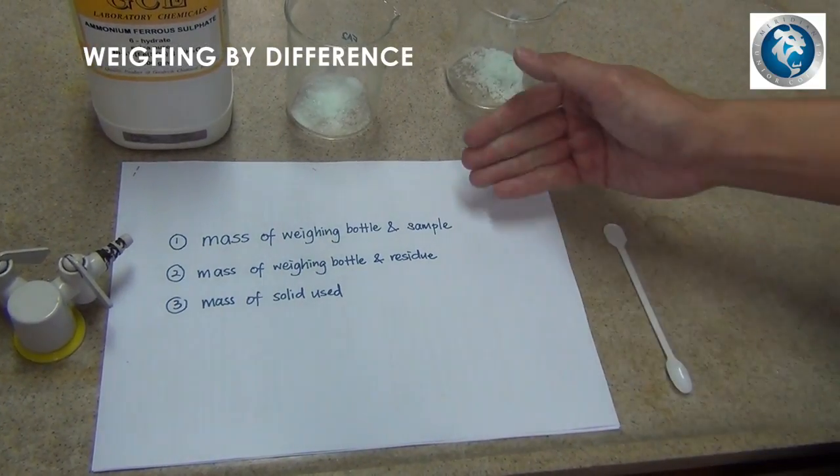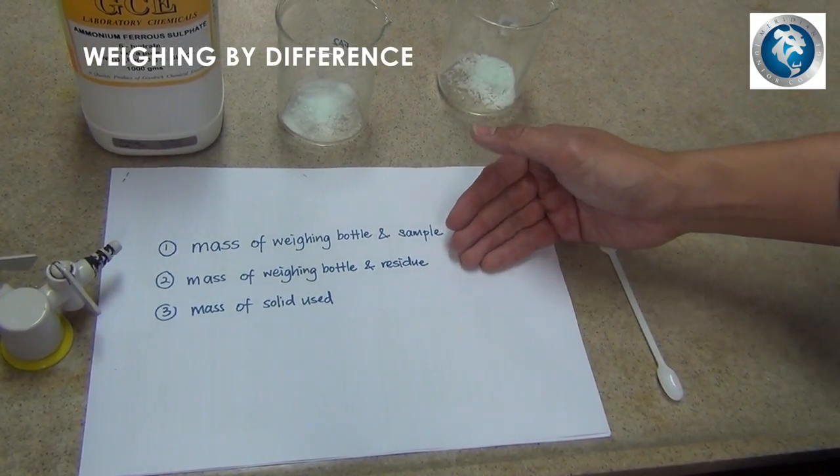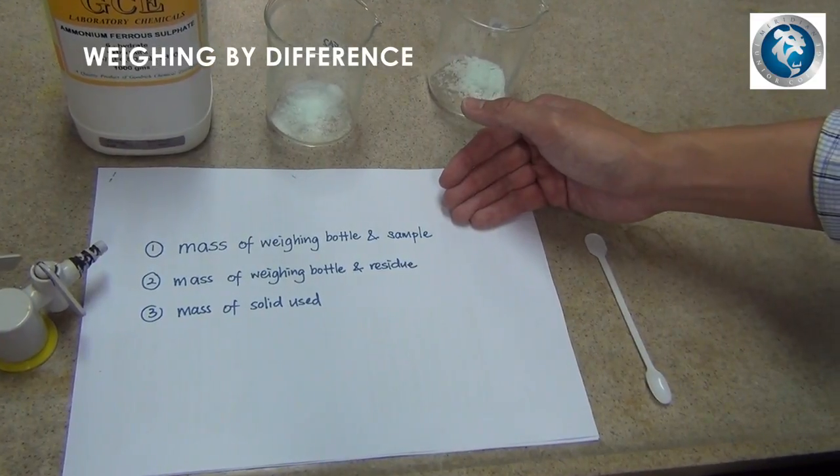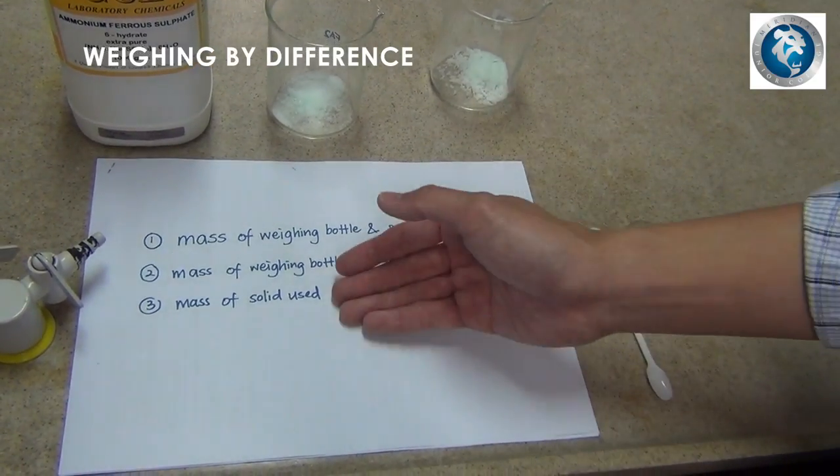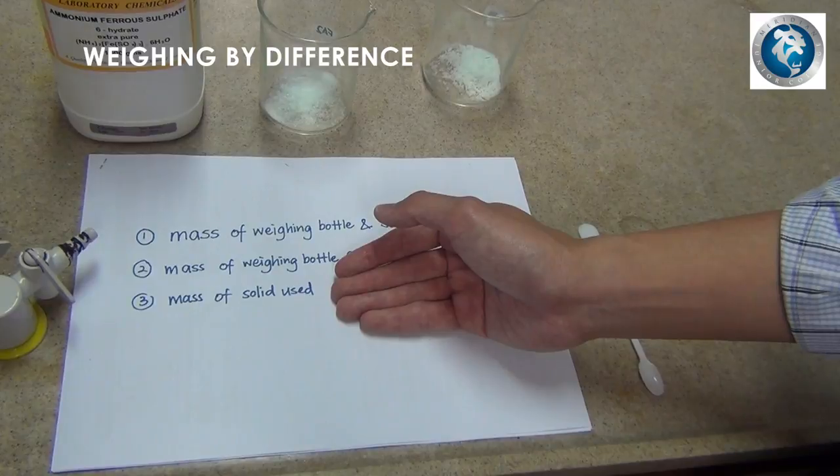After this is done, subtract the second reading from the first reading, and the value that you get would be the mass of solid used in the experiment. I'll see you later.